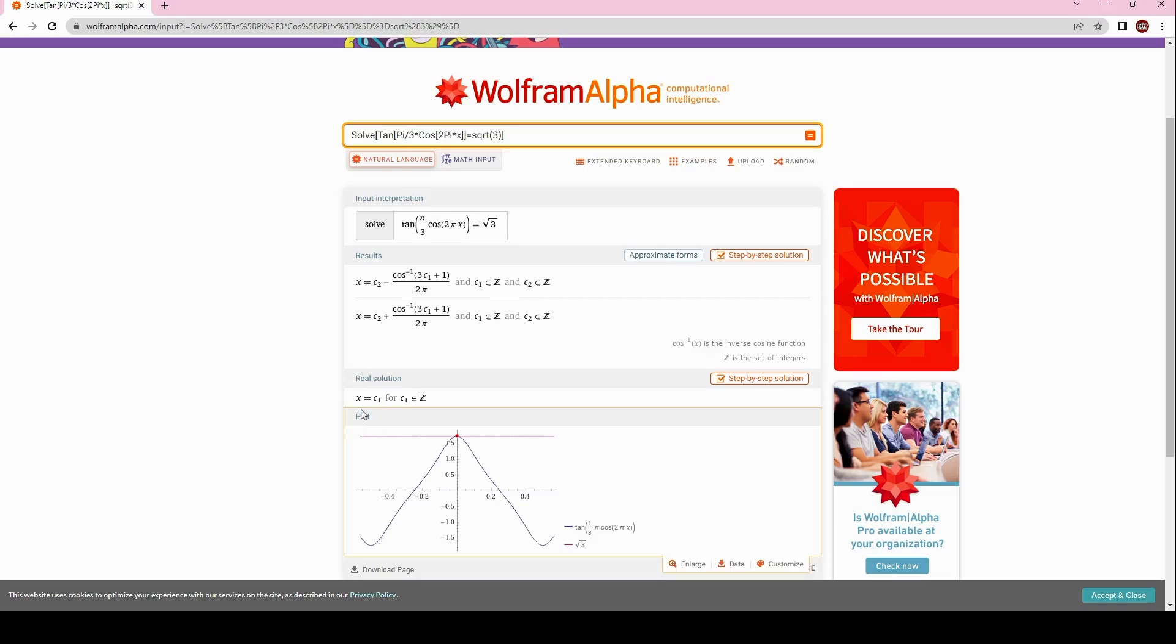So now you see that it is mentioned that the real solution, if you are interested only in real solutions, X is equal to C sub 1. What is C sub 1? C sub 1 is just an integer. So Wolfram Alpha realizes that the solution is this one. I think that was also interesting to compare the results of the applications.